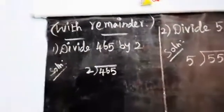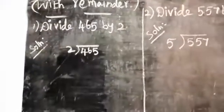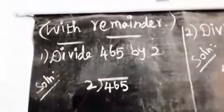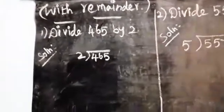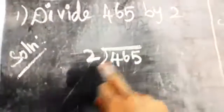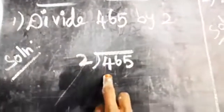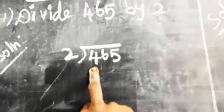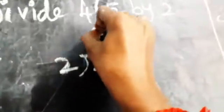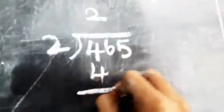Next: division with remainder. With remainder means the remainder comes out to any number — 1, 2, 3, any number. First example: divide 465 by 2. Write the solution — write the dividend inside and the divisor outside. Start with the hundreds place: 4 is there. How many 2s are 4? Yes, 2 twos are 4, so write 2 in the quotient. 2 twos are 4, write 4 in the dividend.